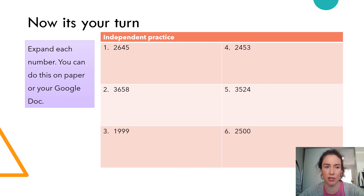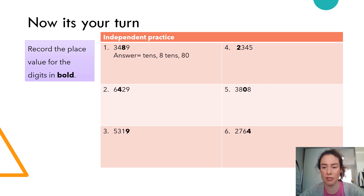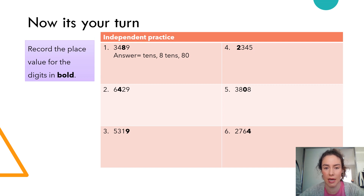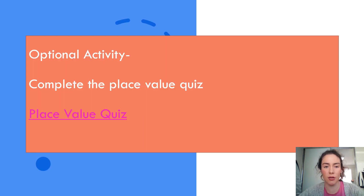Here are your questions continued. Your final set of questions today: identify the number that has been put in bold — that's the dark black writing. For example, 3,489 — what is the value of the 8? It is in the tens, so it's 80, or eight tens. Write those three things down for each bolded number. Your optional activity is to click the link to a place value quiz website from your PDF version of this video.